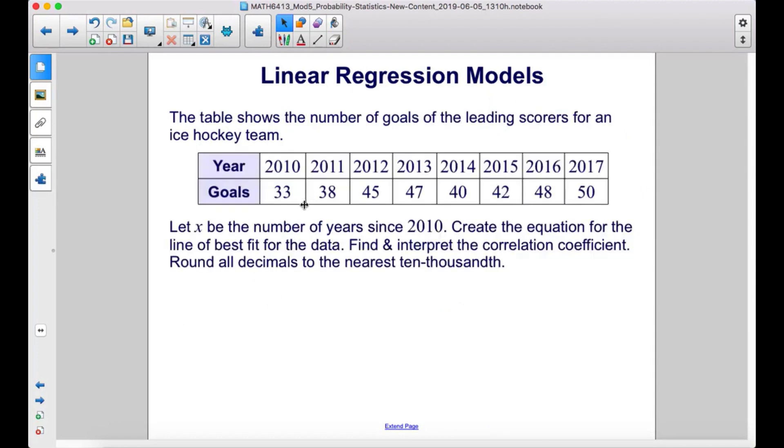The table shows the number of goals of the leading scorers for an ice hockey team. Let x be the number of years since 2010. Create the equation for the line of best fit for the data. Find and interpret the correlation coefficient. Round all decimals to the nearest ten-thousandth.